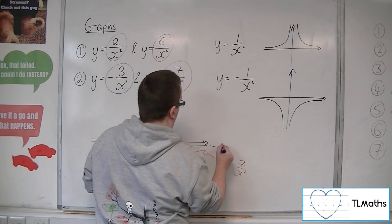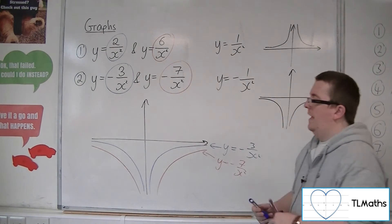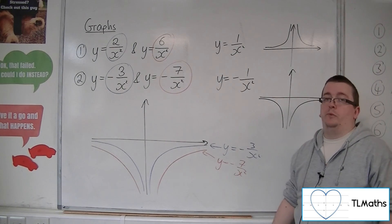And this is your y equals minus 3 over x squared. And that's how we can superimpose two of those graphs.